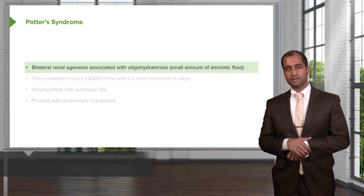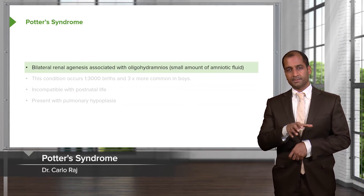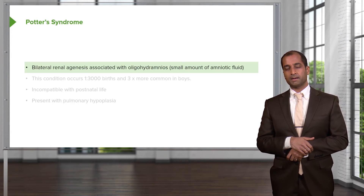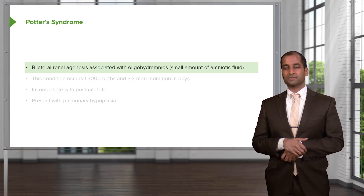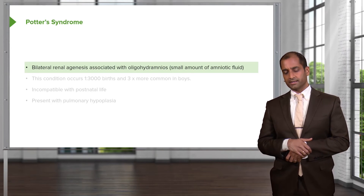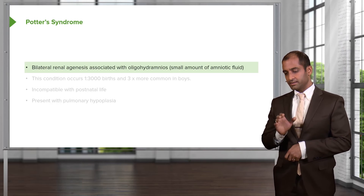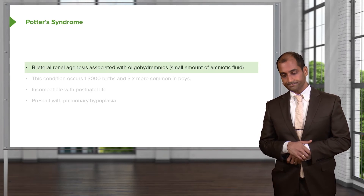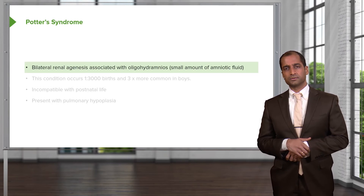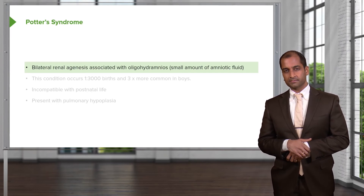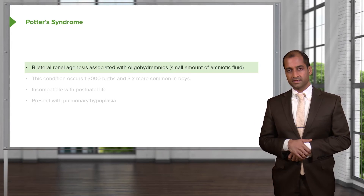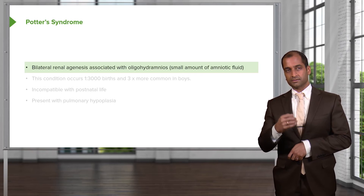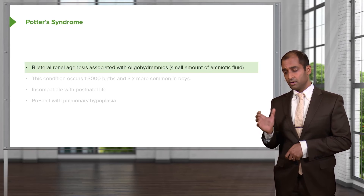Versus Potter syndrome. We just talked about unilateral renal agenesis — now let's talk about bilateral renal agenesis. The story is not so good. Both kidneys are missing — in utero. The fetus within the pregnant woman is missing both kidneys. Think of amniotic fluid and its circulation as being very primitive and simple for learning purposes.